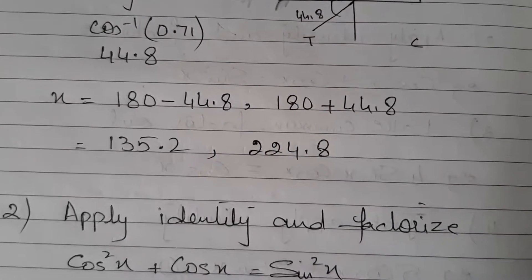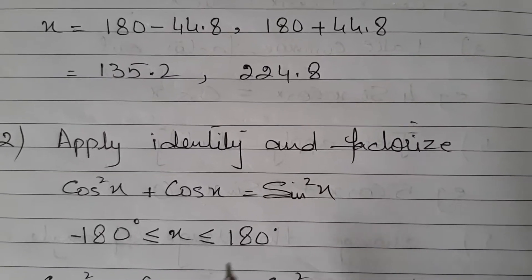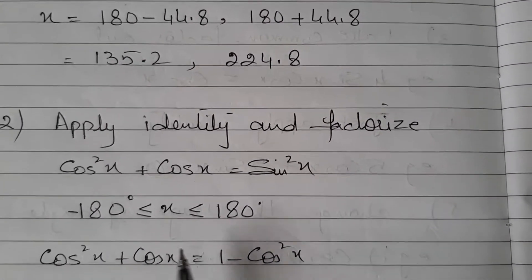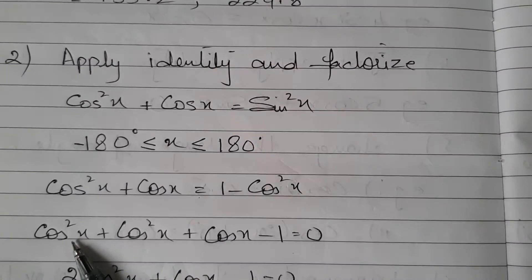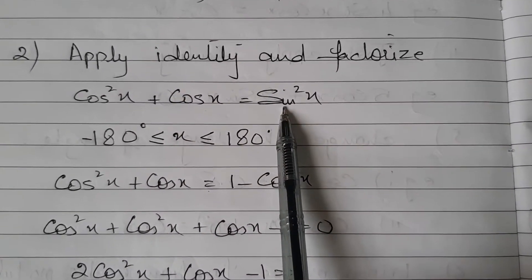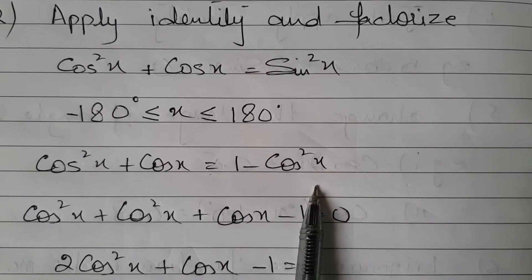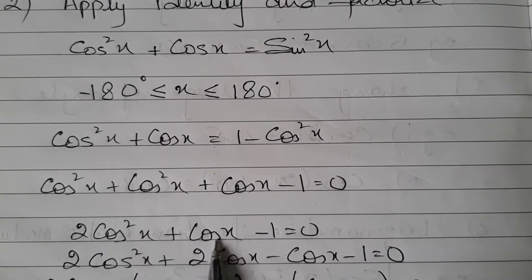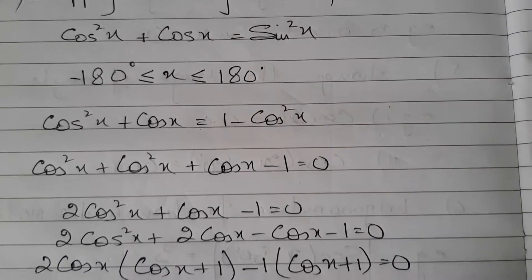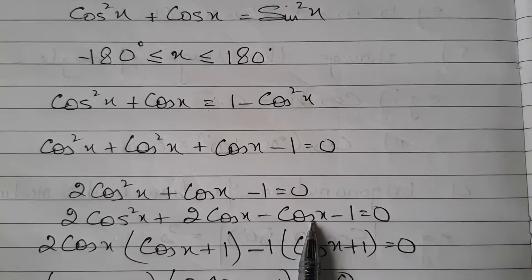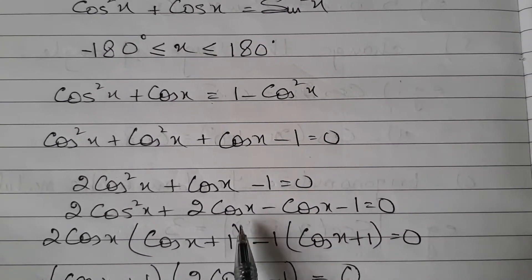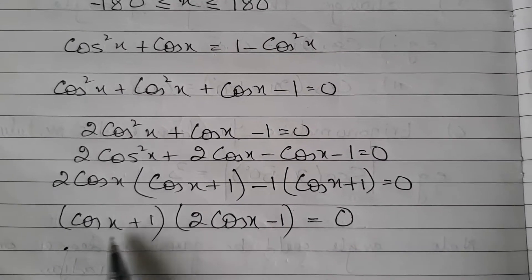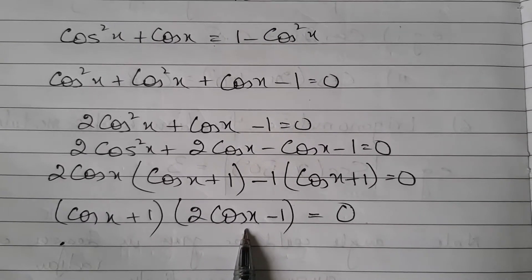The next case is where you apply an identity and then factorize. Look at this question — there are two trigonometric functions, sine and cos, and the range within which I have to give the answer is −180° to 180°. Instead of sin²x, I apply the identity 1 − cos²x, then take the terms to one side. It becomes a quadratic equation in terms of cos x, and I apply middle-term breakup factorization. This gives cos x = −1 or cos x = 1/2.